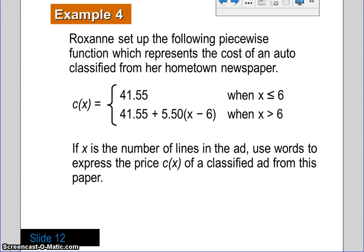Alright. Example four. It says Roxanne set up the following piecewise function which represents the cost of an auto-classified from her hometown newspaper. And, so you can see the piecewise function as follows. And, it says if X is the number of lines in the ad, use words to express the price C of X as a classified ad for this paper. So, we've done something like this before, so we're just putting into regular words, not math terms, just everyday terms. So, when I think of answering this question, imagine yourself working for this newspaper and somebody's calling in and asking what your rates are for them to place an ad. So, this is how you would tell them. You wouldn't say in this function, it's $41.55. You wouldn't say it like you would mathematically.